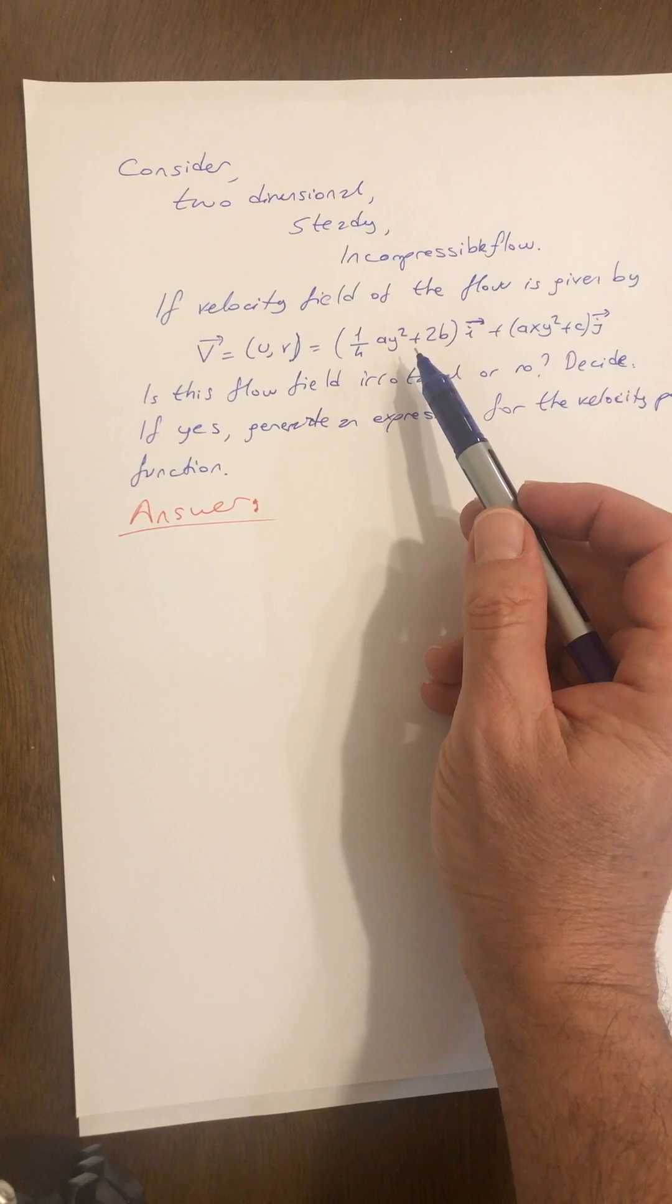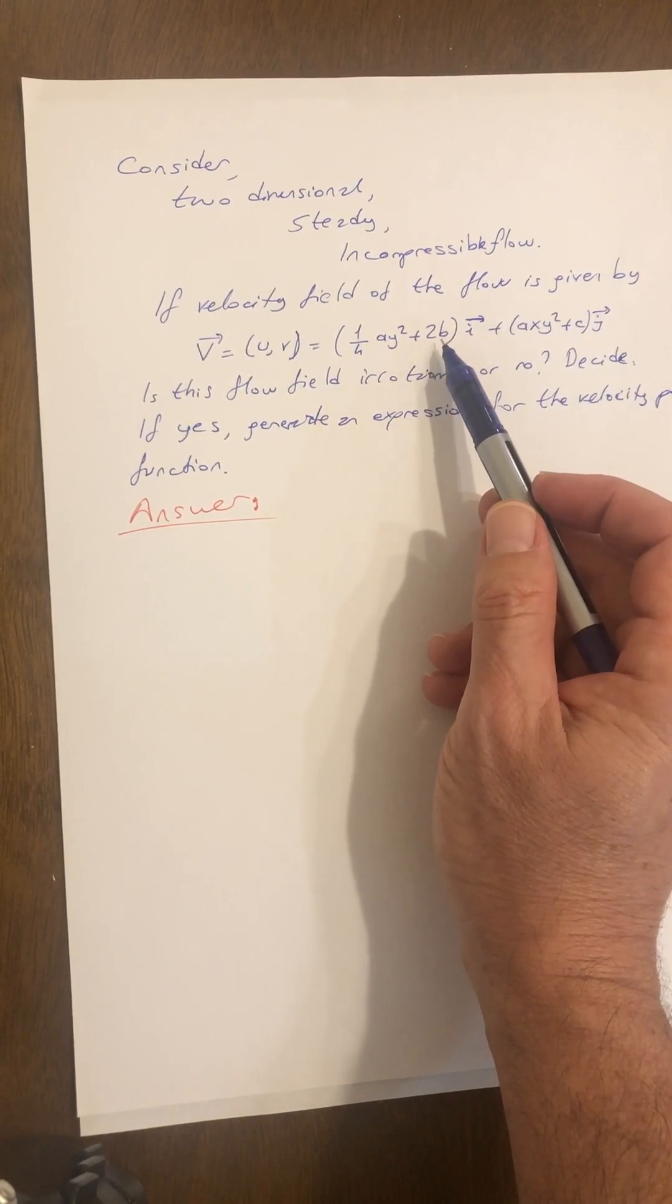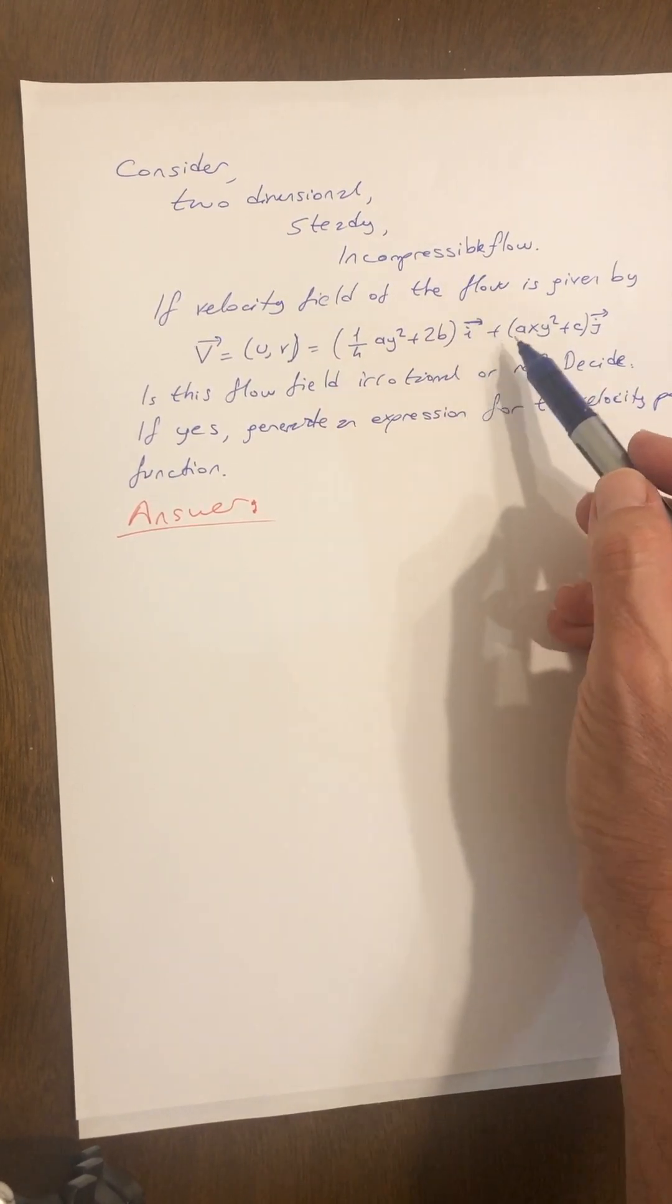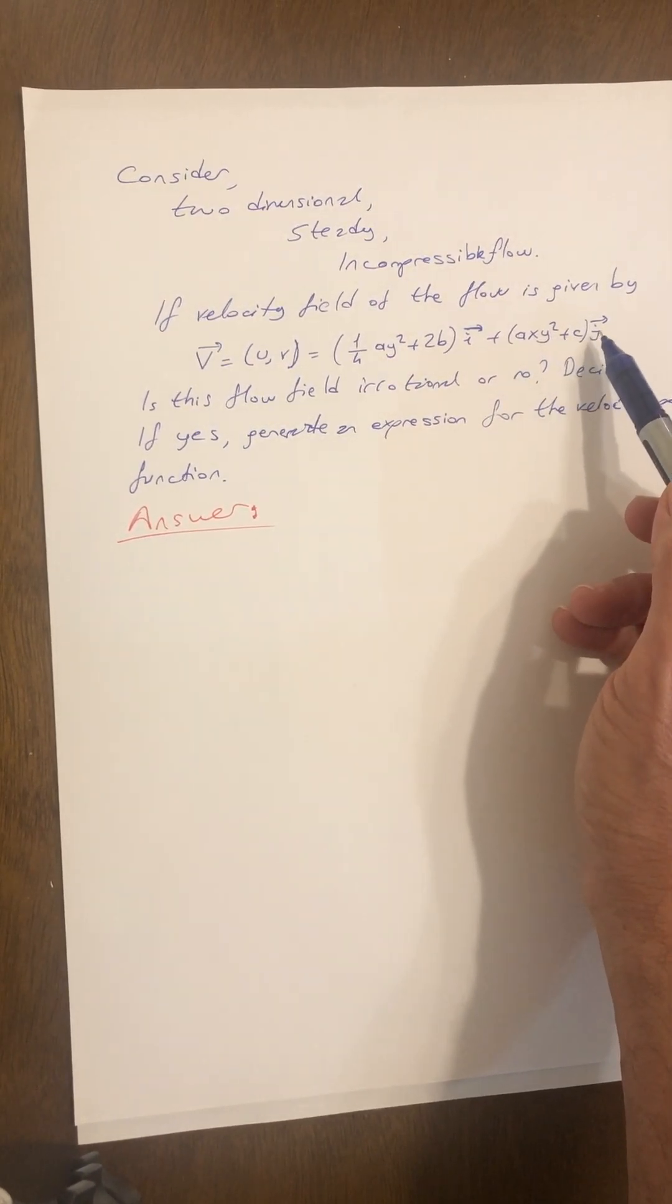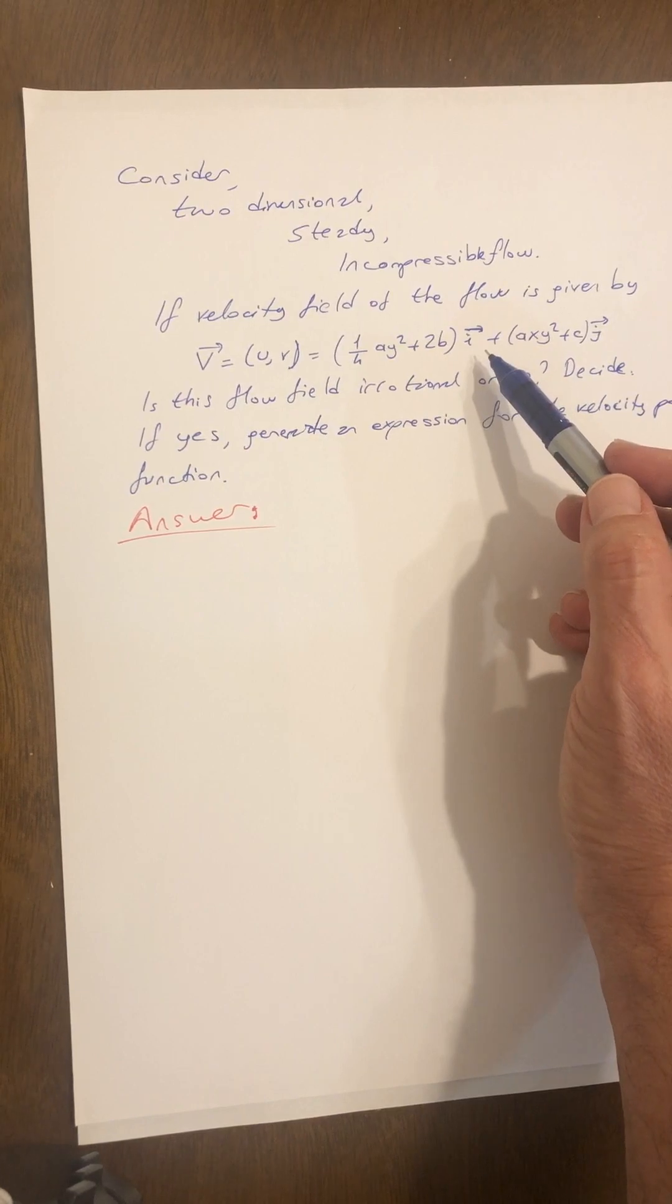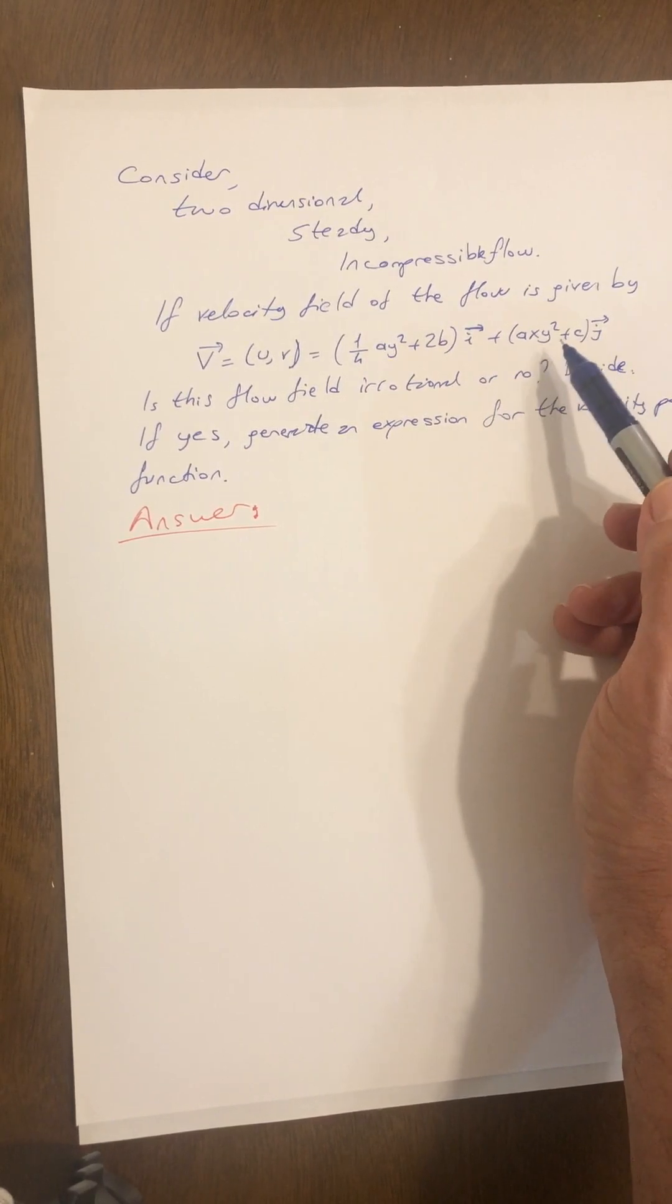then axy squared plus c j. As you know that here i and j are unit vectors.